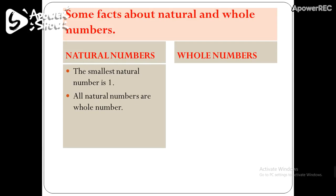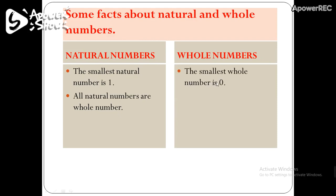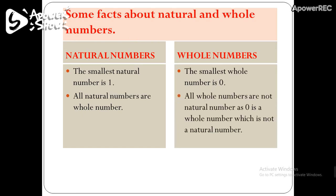Now, some facts about whole numbers: the smallest whole number is 0, since whole numbers start from 0. The second fact is: all whole numbers are not natural numbers, because 0 is a whole number which is not a natural number. So all natural numbers are whole numbers, but all whole numbers are not natural numbers, as 0 is a whole number but not a natural number.